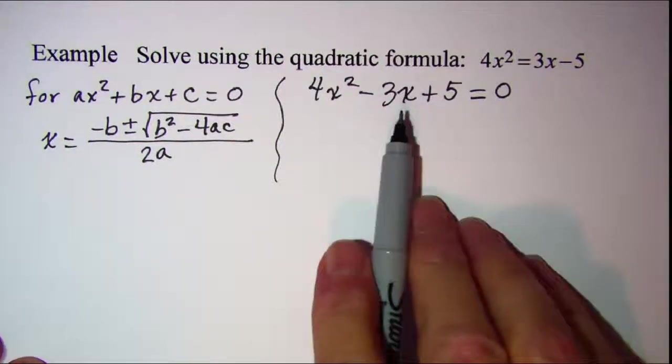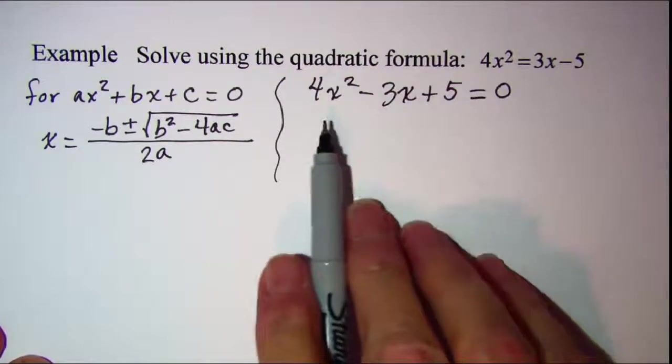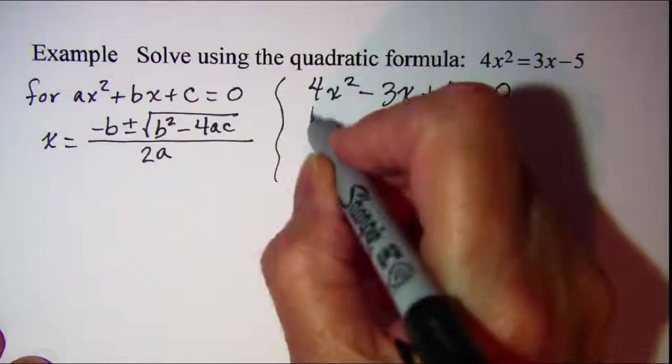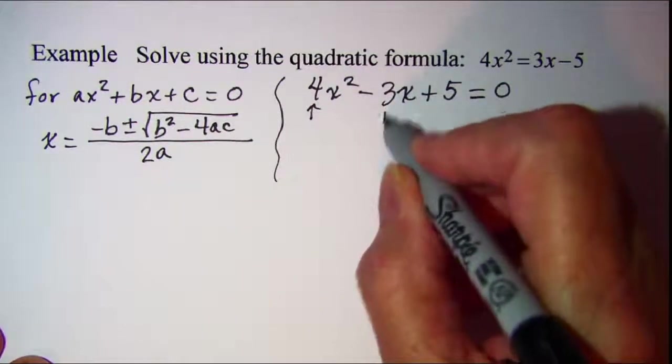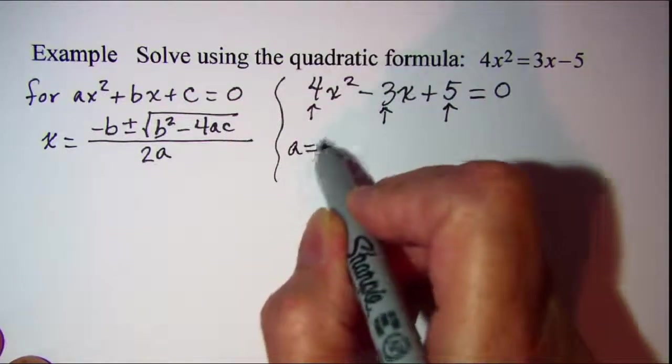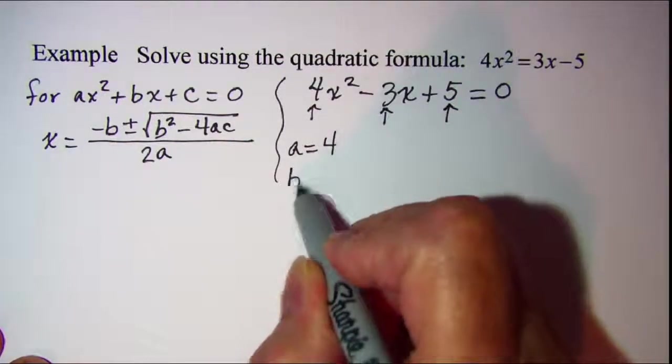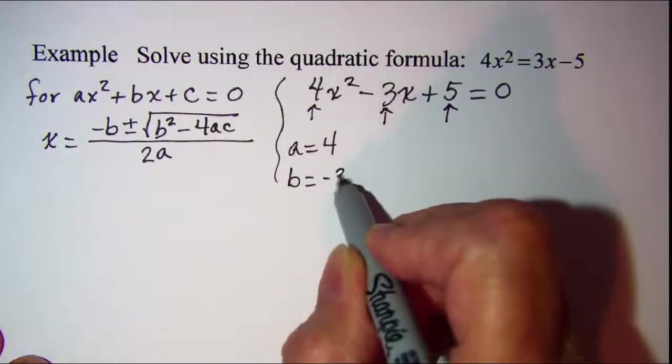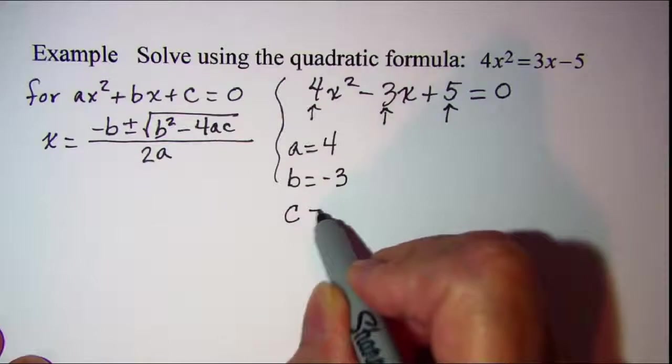Once I have my equation written in standard form I can find the values for a, b, and c. Let me write those over here: a is 4, b is negative 3, and c is 5.